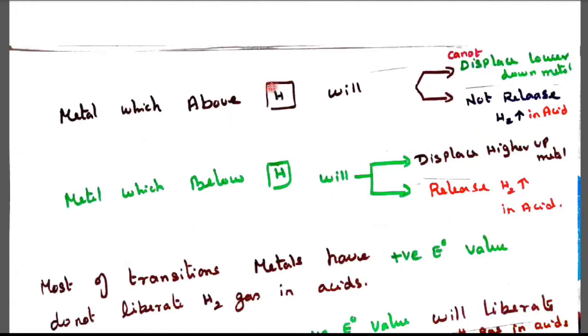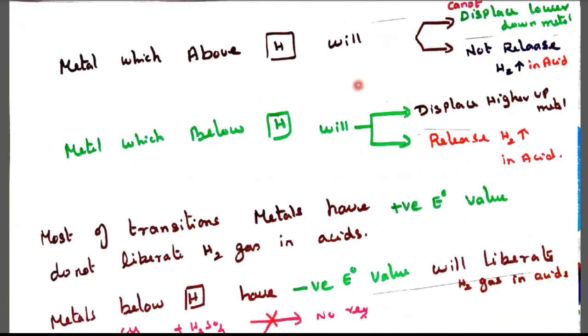So metal with above H, I mean higher up series, they are all strong oxidizing agents, cannot displace the lower down metal, not release the hydrogen in an acid. And below, lower down the series of H, will displace the higher up metal and releases the hydrogen in an acid. These are the very tricky points you noted.